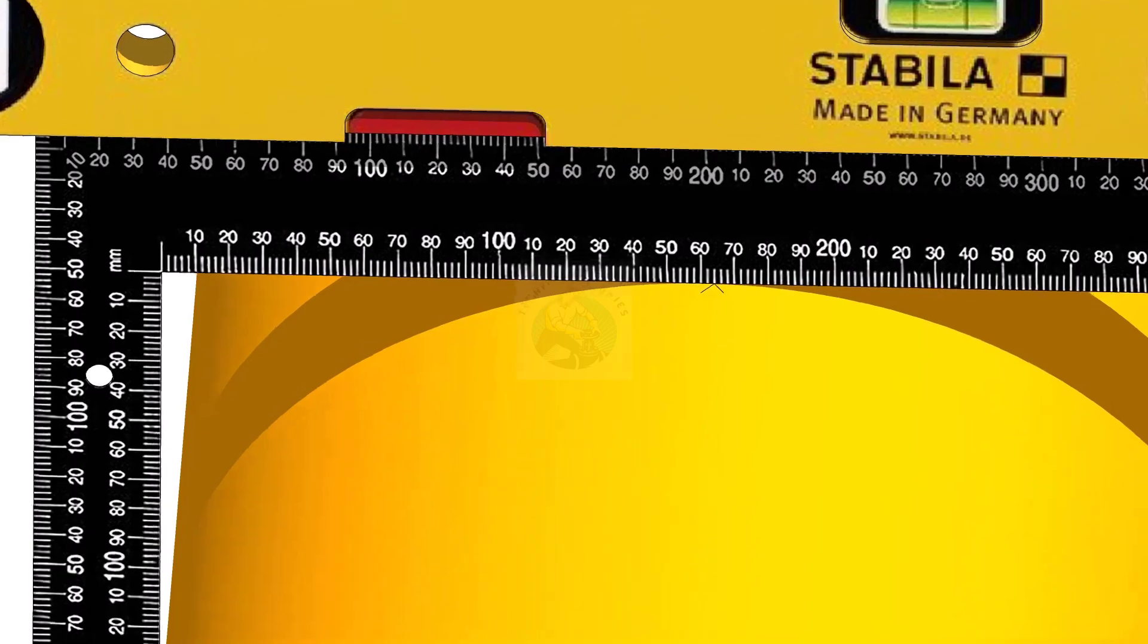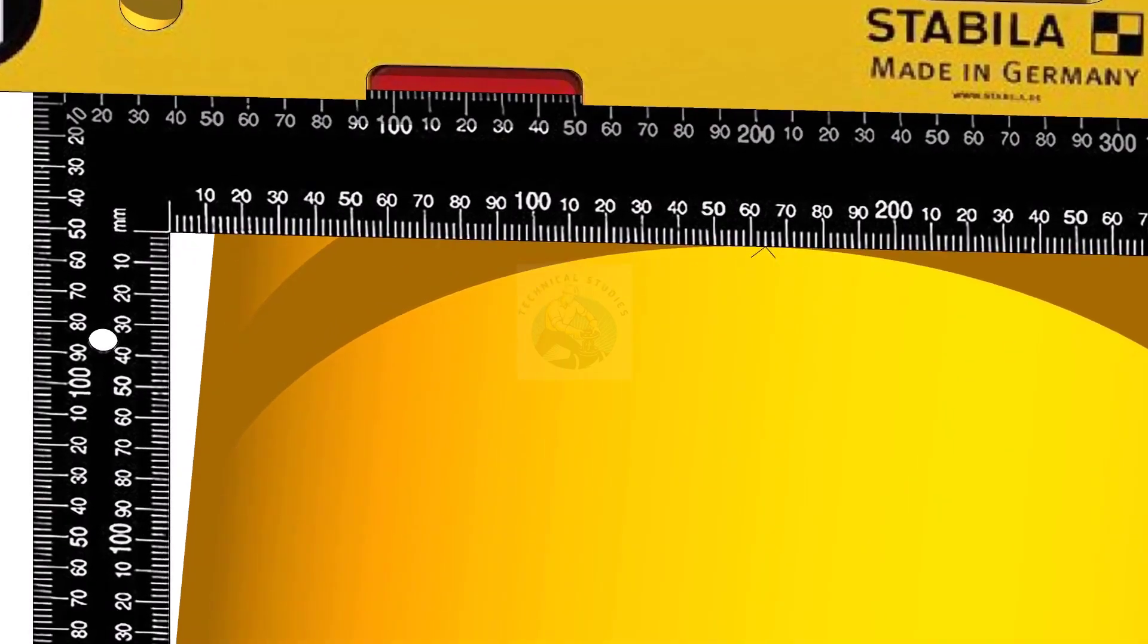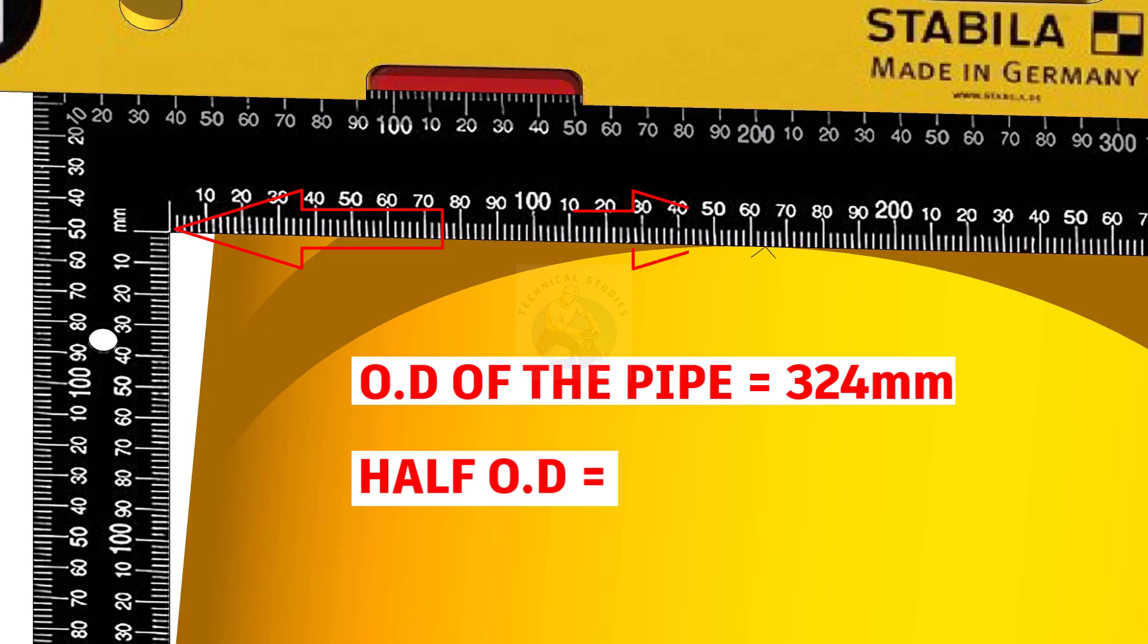Mark half diameter of the pipe on the top of the pipe as shown. Since the OD of this pipe is 324mm, I marked 162mm here.